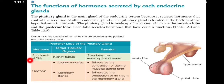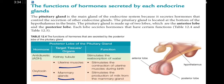The first hormone from the posterior lobe is ADH, or anti-diuretic hormone. Its target tissue is the kidney tubule, and its function is to stimulate the reabsorption of water. The second hormone is oxytocin. Its target tissues are the mammary glands and uterine muscles. Oxytocin stimulates the contractions of uterine muscle during birth, and stimulates the production of milk from the mammary glands.